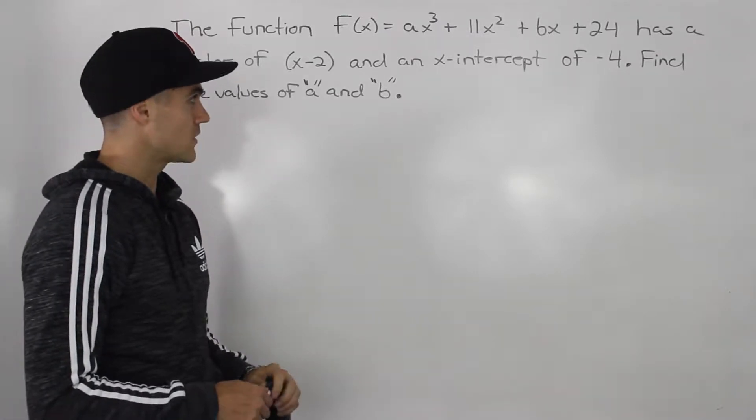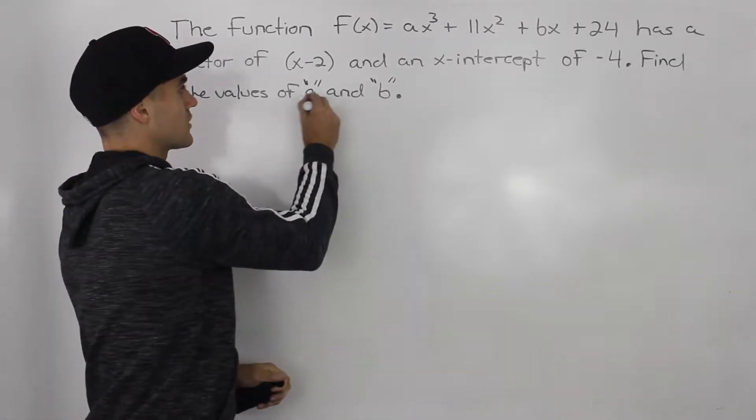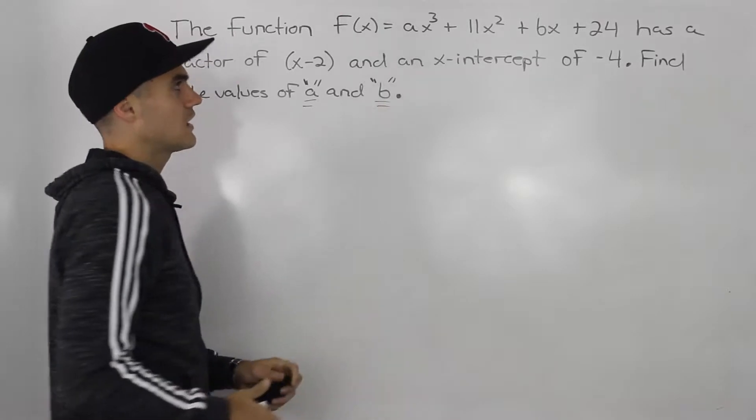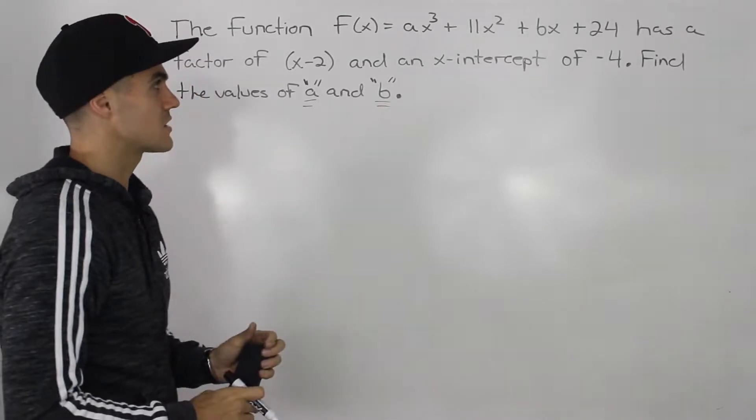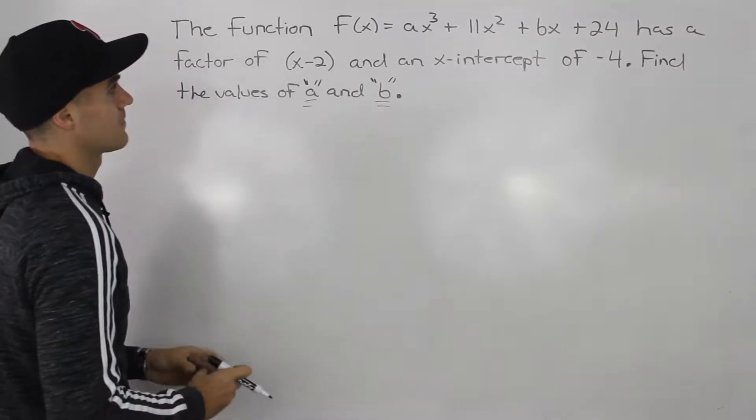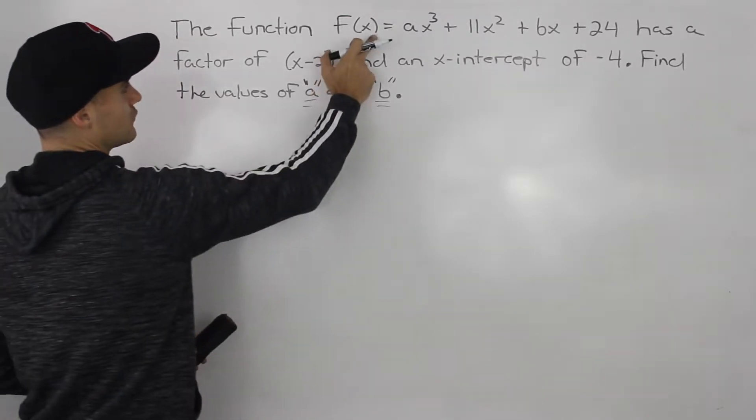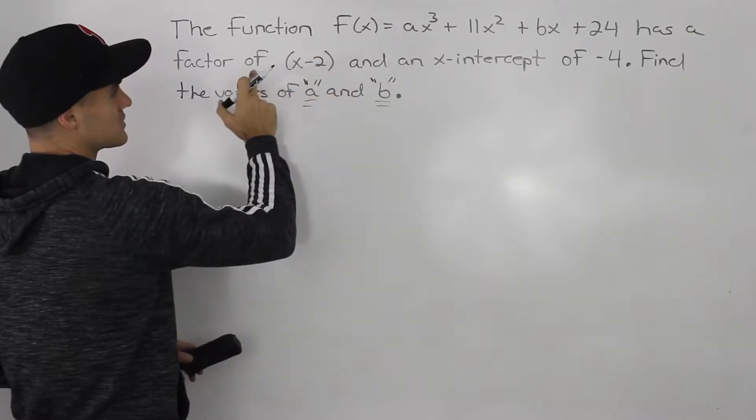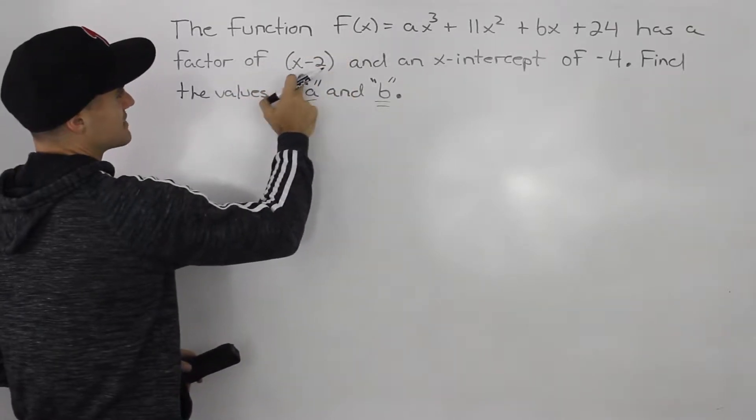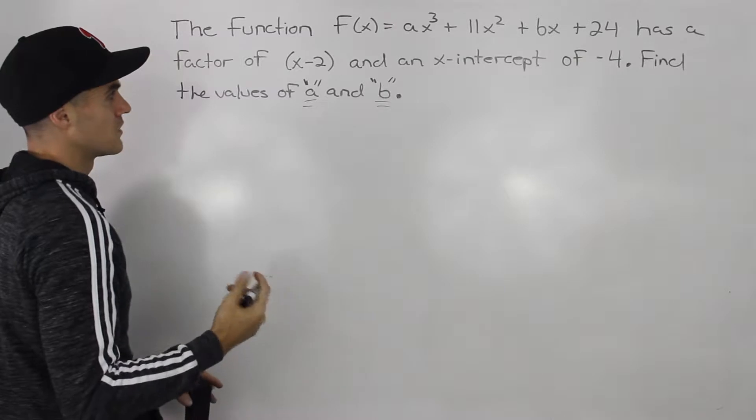So notice in this question, we have to find two constants, meaning that usually we're going to need two equations, and then we're going to have to do substitution or elimination. So this is the polynomial function we're working with. Let's try to see what we can do with this first piece of information, that it has a factor of x minus 2.